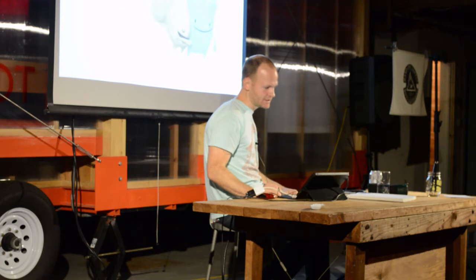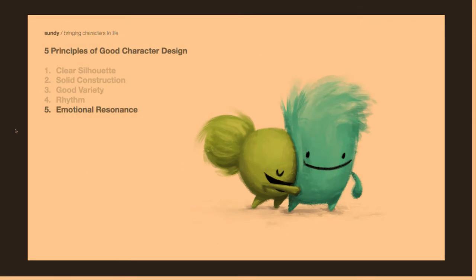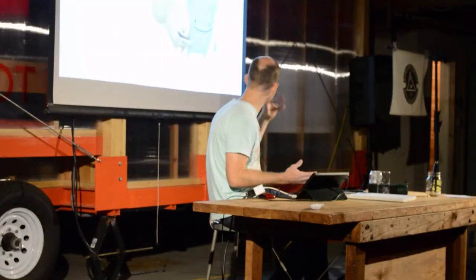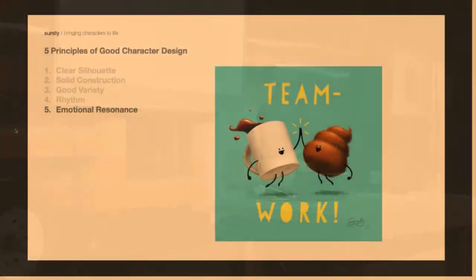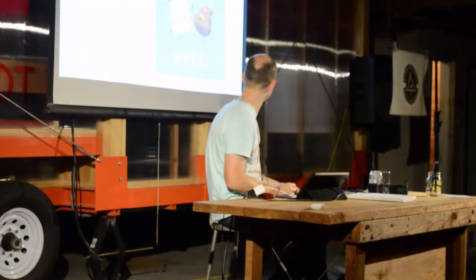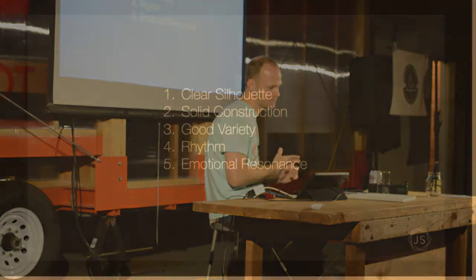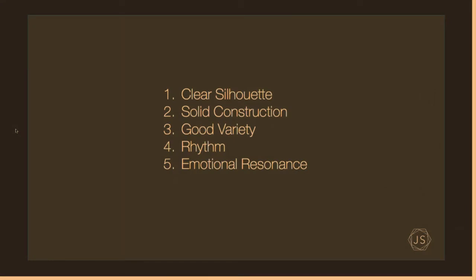The last element is emotional resonance, and I really do feel like this is the most important. If you're designing a character, their intent is to tell a story — whether it's for a video game, a movie, or a kids' book. If you can't connect on an emotional level, then the characters aren't very effective. You can go with sentimentality, a mood, or just funny — which is a great way to connect, making people laugh is a personal favorite of mine. Basically, if people look at your characters or the scene you've made and they don't feel anything, then to me that's not a successful design. To sum up: good design is clear silhouette, solid construction, good variety, rhythm, and emotional resonance.